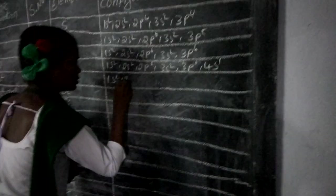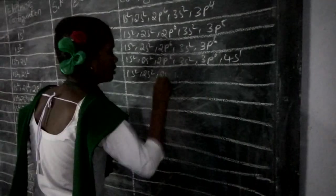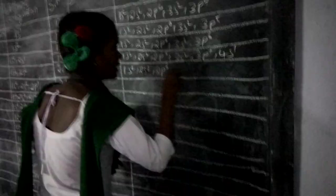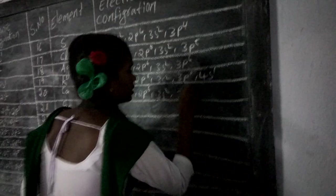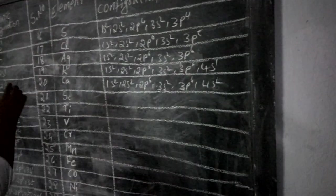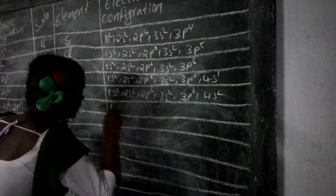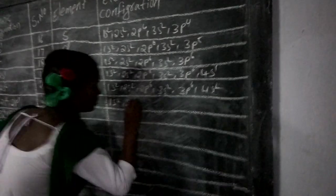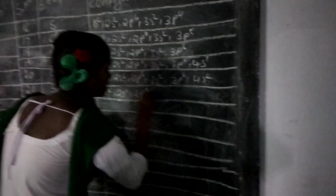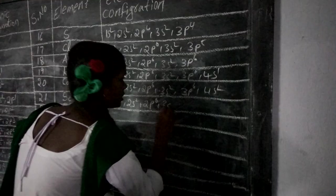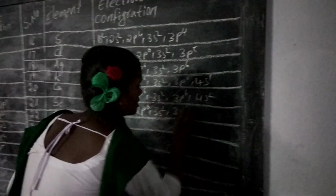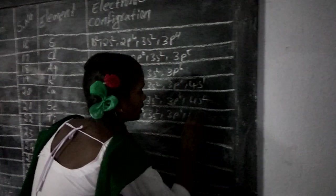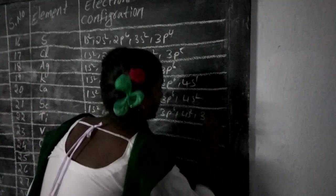1s2, 2s2, 3p6, 4s2. 1s2, 2s2, 2p6, 3s2, 3p6, 4s2. 1s2, 3p6, 4s2, 3d1.